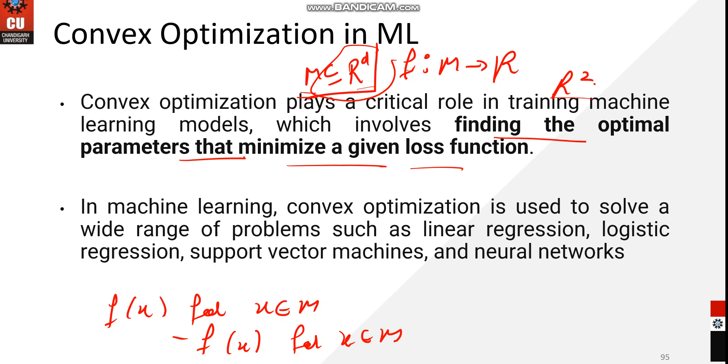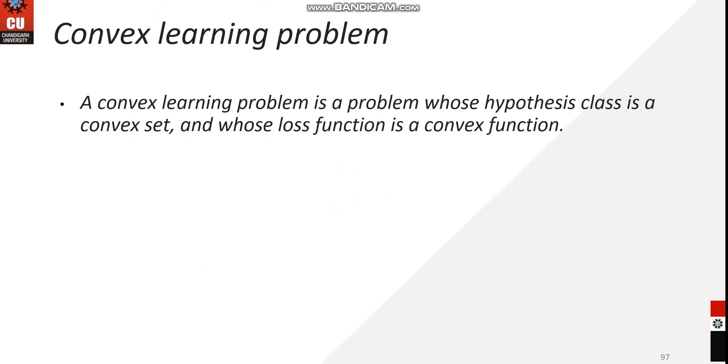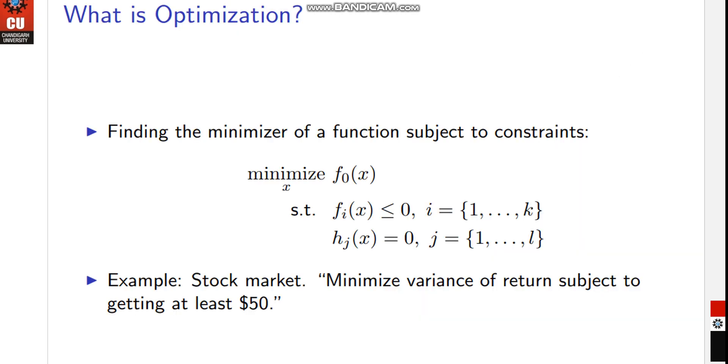We should also discuss constraint optimization, which simply means that the objective function in a convex problem is a convex function and the solution set is a convex set. We need to know about the optimization problem having a standard form.